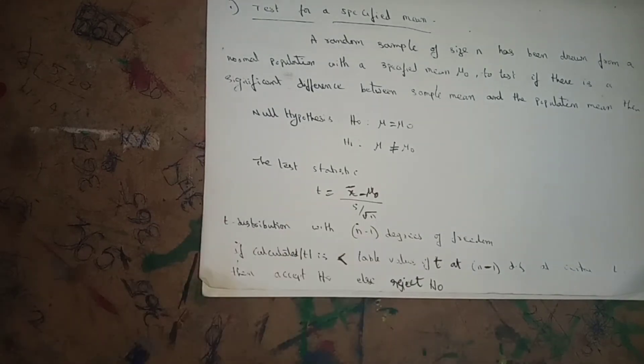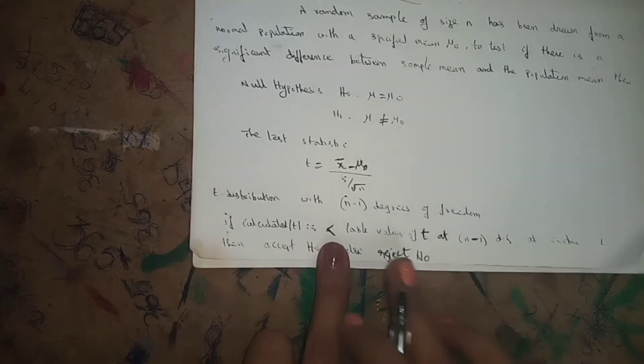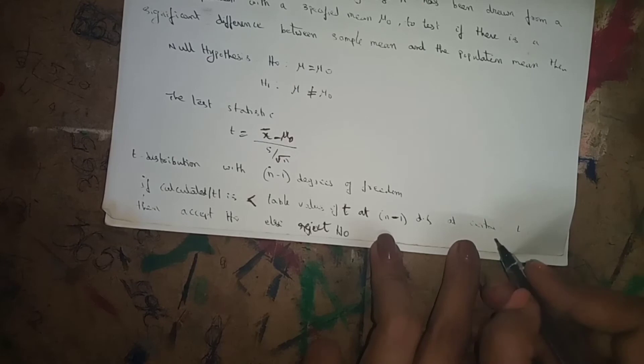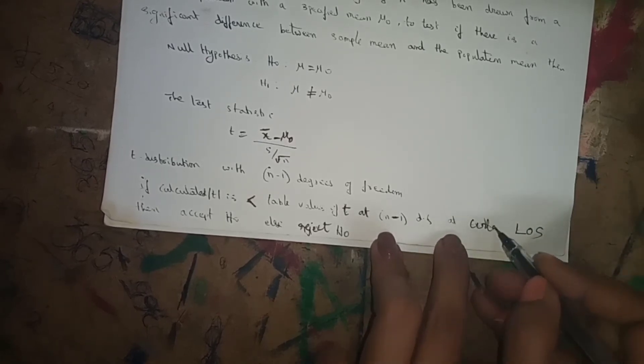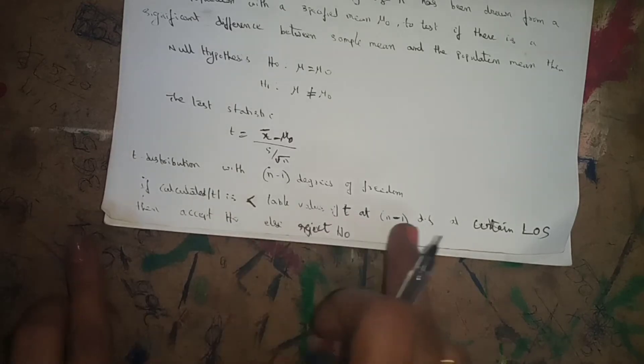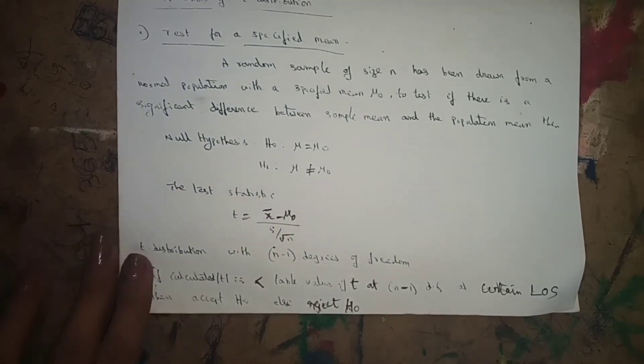To decide whether to accept or reject H₀: if the calculated value |t| is less than the table value of t at n−1 degrees of freedom at a certain level of significance (LOS), then we accept H₀. The default level of significance is 5% if none is given. If the calculated value is greater than the table value, we reject H₀.